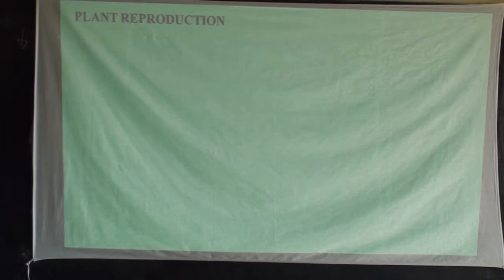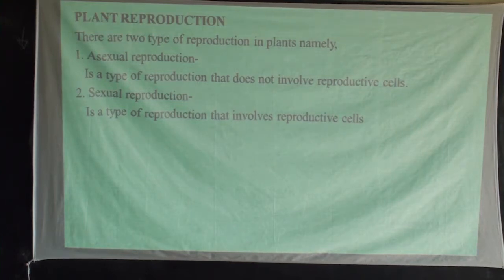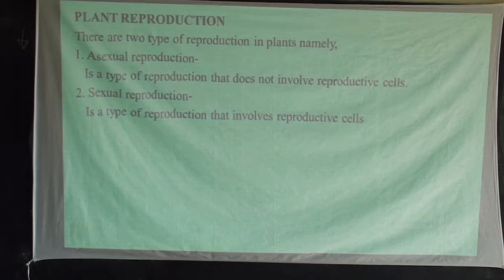So for this time, we want to check how plants reproduce. Looking at plant reproduction, we look at two types of reproduction which happen in plants: number one is asexual reproduction, and the second is sexual reproduction.